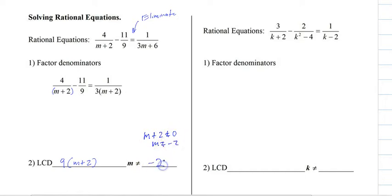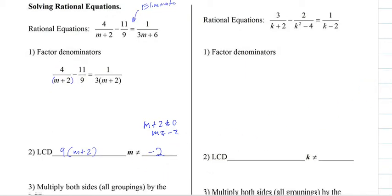Which means we have a restriction that m cannot equal negative 2. And if you check it by plugging it in, negative 2 plus 2 is 0. 4 divided by 0, that's undefined. So as long as we don't get a negative 2 for an answer, we're good.